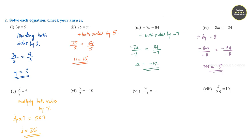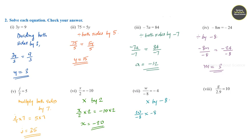Question number 6: multiplying both sides by 2, j by 2 into 2 is equal to minus 10 into 2, so j is equal to minus 20. Question number 7: multiplying both sides by minus 8, w by minus 8 into minus 8 is equal to minus 4 into minus 8, so w is equal to 32.